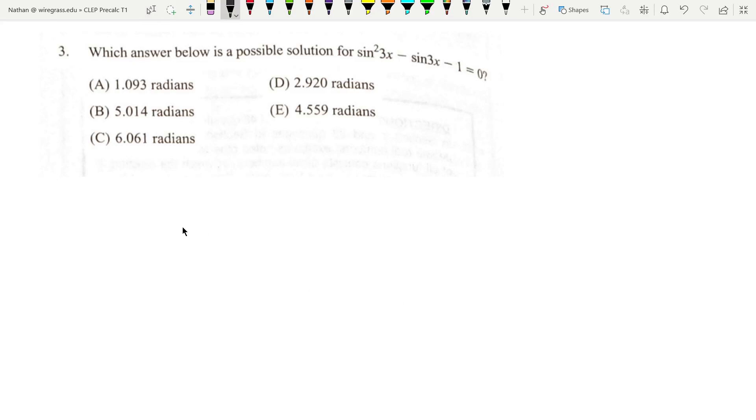Okay, this problem we have sine squared of 3x, minus sine of 3x, minus 1. This looks like a quadratic form to me. So if we say u equals sine of 3x, then u squared equals sine squared of 3x, and that's going to give us u squared minus u minus 1 equals 0.